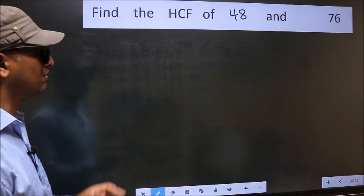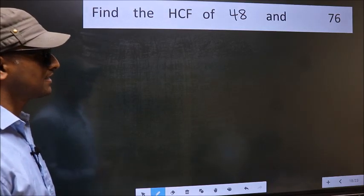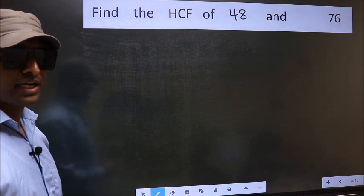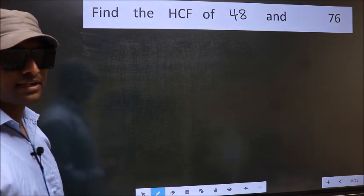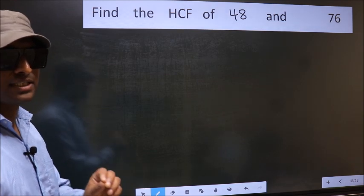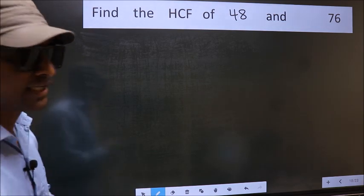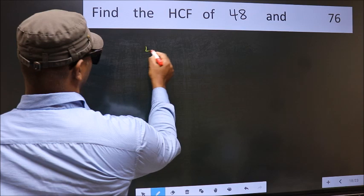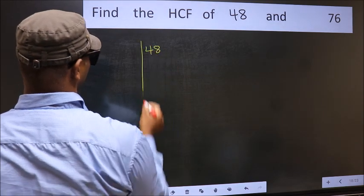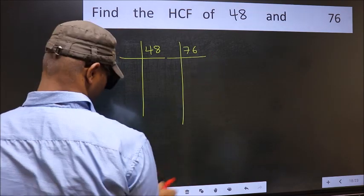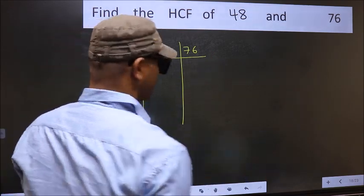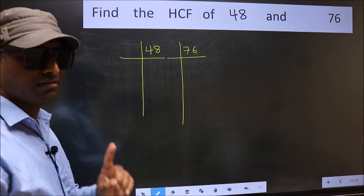Find the HCF of 48 and 76. To find the HCF, we should do the prime factorization of each number separately. What I mean is 48 and 76. This is your step 1.